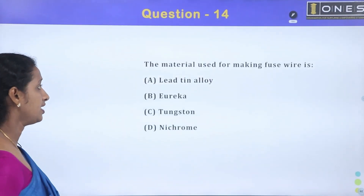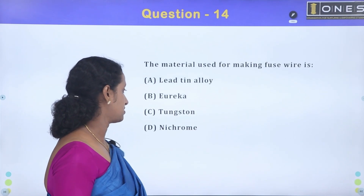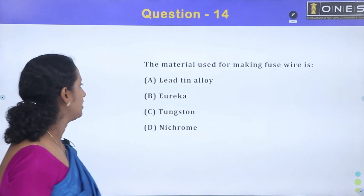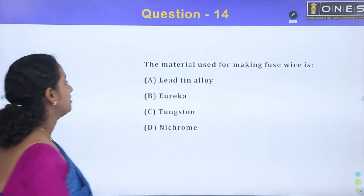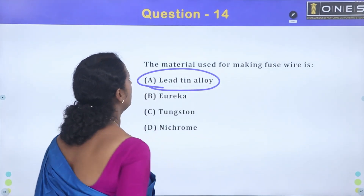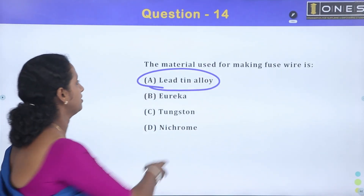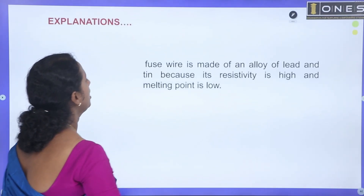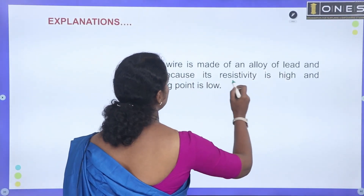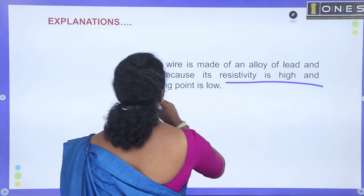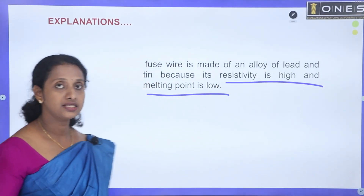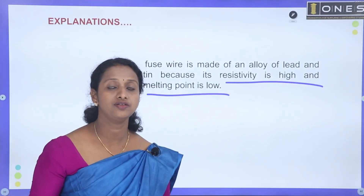Next question: what material is used for making fuse wire? The answer is lead-tin alloy, used for making fuse wire. A fuse is made up of lead and tin because its resistivity is high and its melting point is low — high resistivity and low melting point.